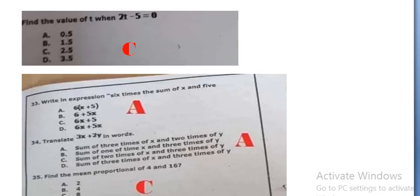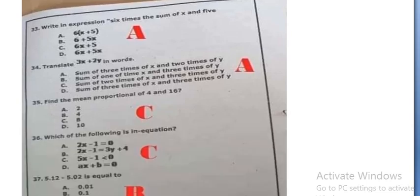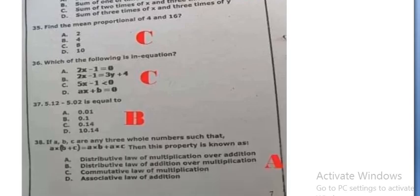Sum of 3 times of x and 2 times of y, option A. Find the mean proportion of 4 and 16: 8, option C. Which of the following is an equation: 5x minus 1 less than 0. 5.12 minus 5.02 is equal to 0.1, option B.